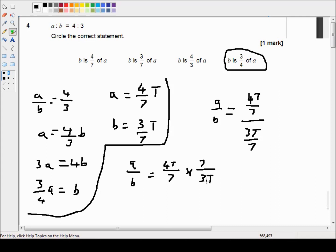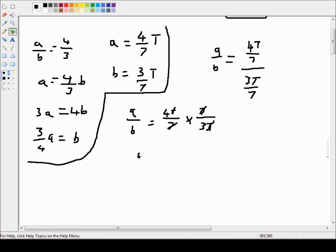Now the totals can cancel and the sevens can cancel. So we're left with A over B is equal to 4 over 3, which is what we started with up here.